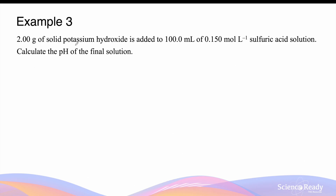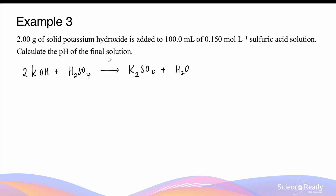Let's look at example 3. Two grams of solid potassium hydroxide is added to 100 milliliters of 0.150 moles per liter of sulfuric acid solution. Calculate the pH of the final solution. The first step is to write a balanced chemical equation: potassium hydroxide plus sulfuric acid (H₂SO₄) gives potassium sulfate (K₂SO₄) plus water. In this case, it's not a 1 to 1 ratio — we need to multiply potassium hydroxide by 2 to balance the potassium, and add a 2 in front of water to balance hydrogen and oxygen. So the ratio of potassium hydroxide to sulfuric acid is 2 to 1.